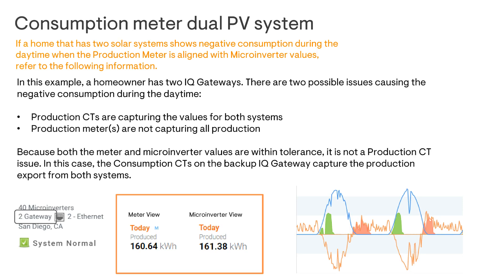In this case, the consumption CTs on the secondary IQ gateway capture the production export from both systems. If both systems are exporting excess production to the grid through the consumption CTs, you have two options to troubleshoot.